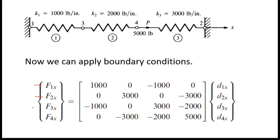Then I go to F3X, which means force on node 3. Node 3 is a free node — it is not fixed — therefore there is no resistance, which means F3X equals 0. Finally, F4X: at node 4 there is an applied force of 5000 directed in the positive X direction, so F4X equals 5000. Those are the boundary conditions for forces.